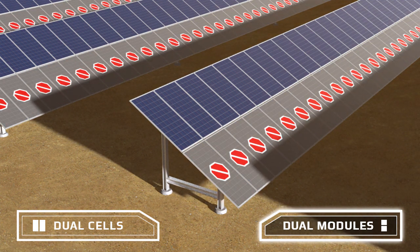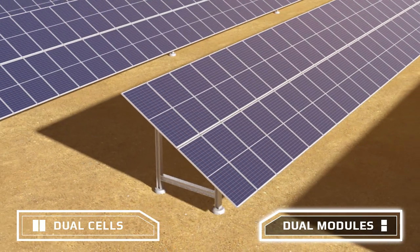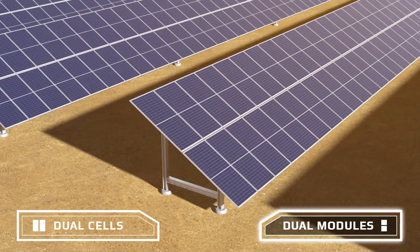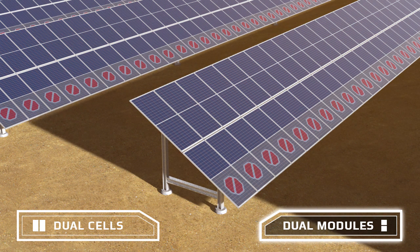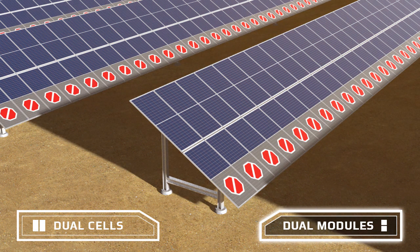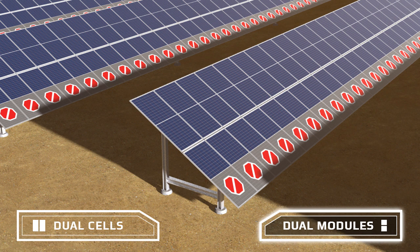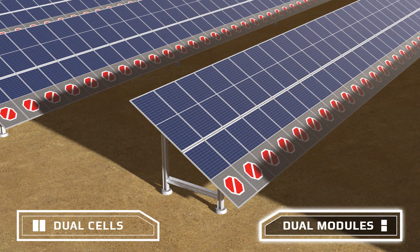With KOO modules, when the bottom is shaded, only the bottom half of the module stops producing. This allows you to optimize your system design for tighter inter-row spacing.